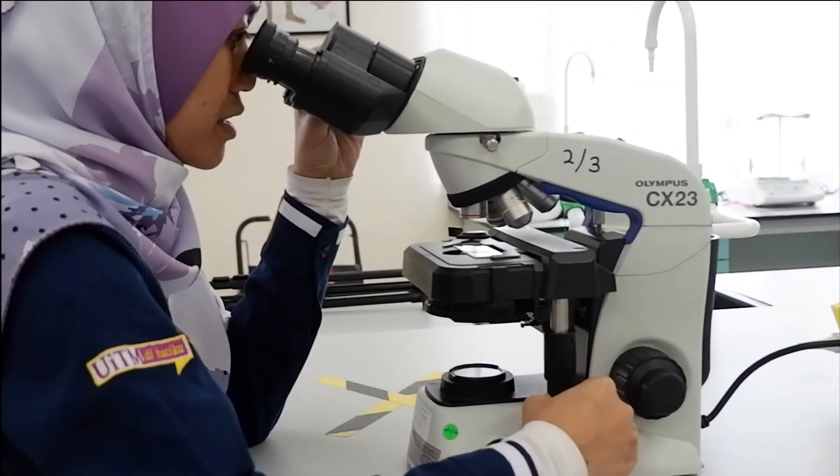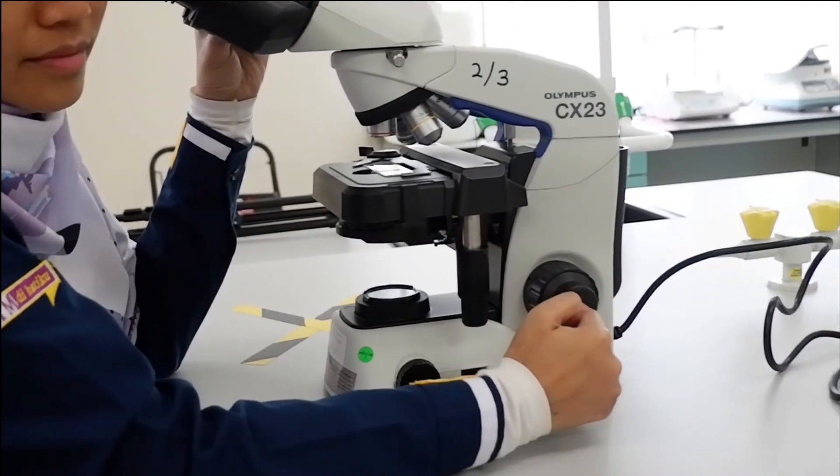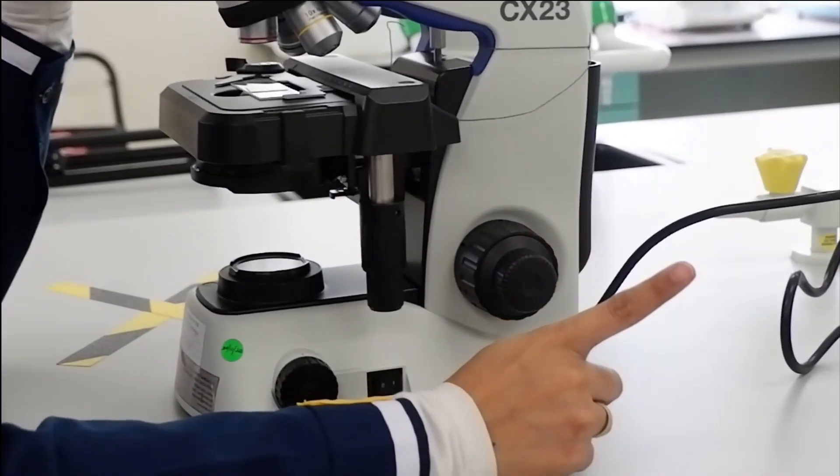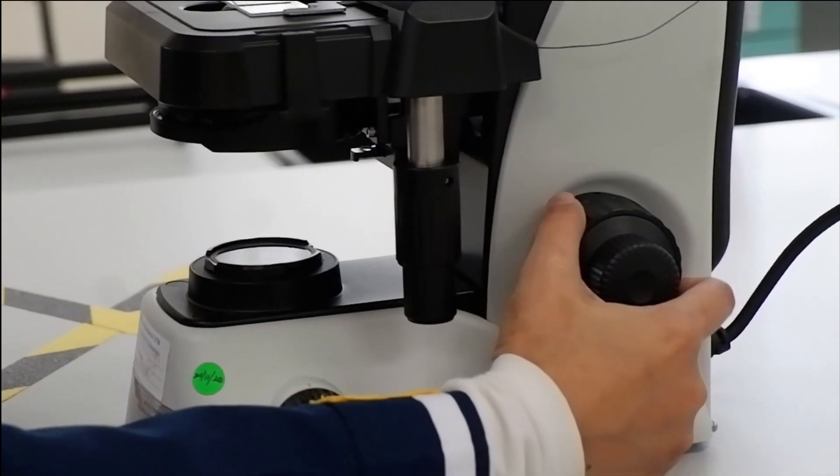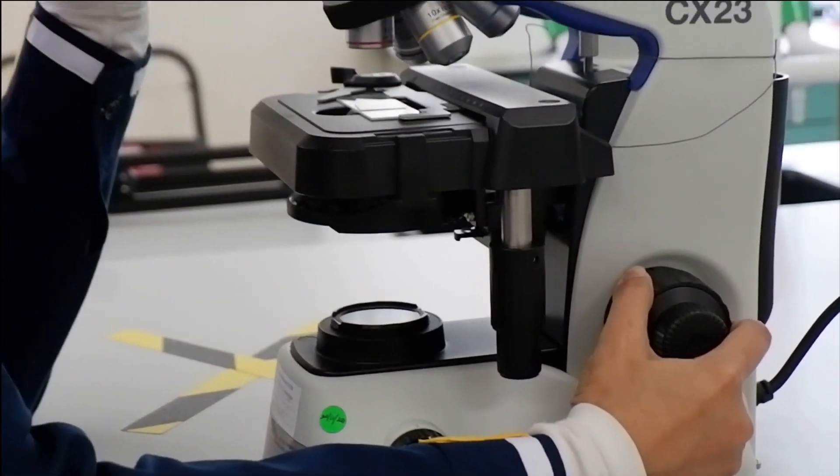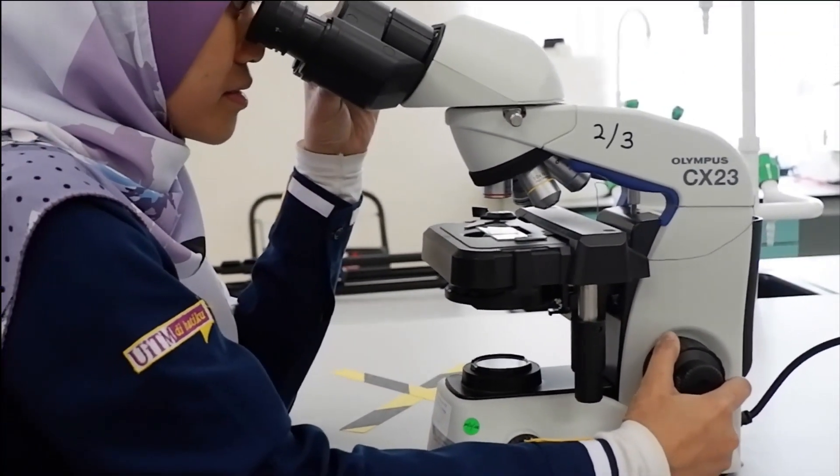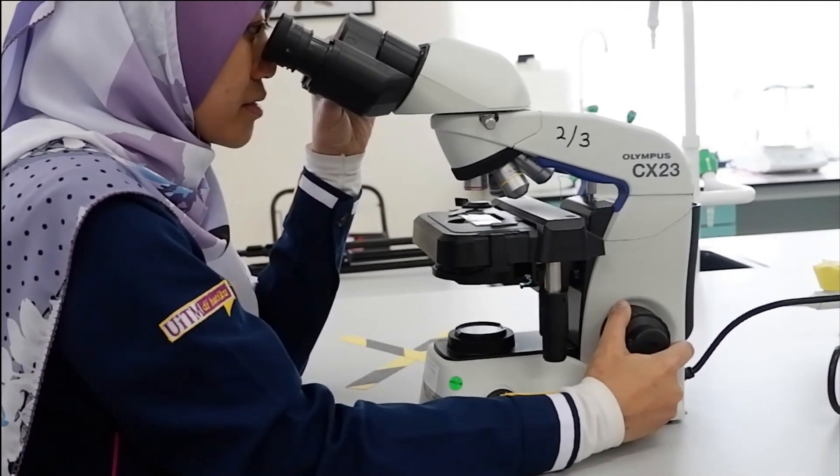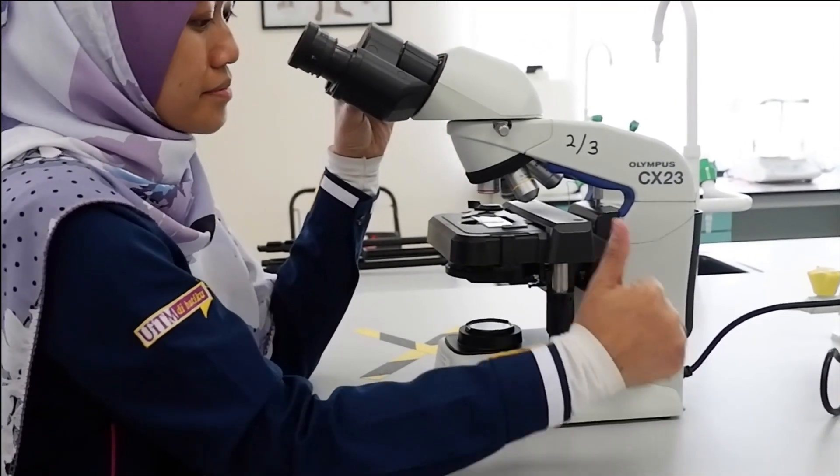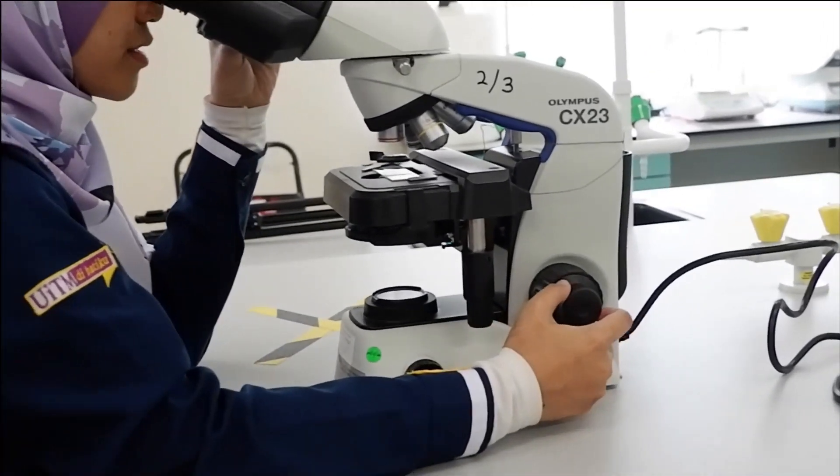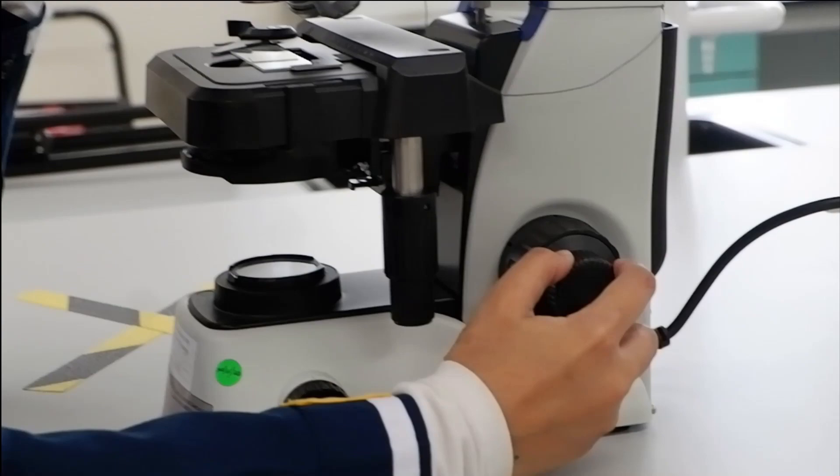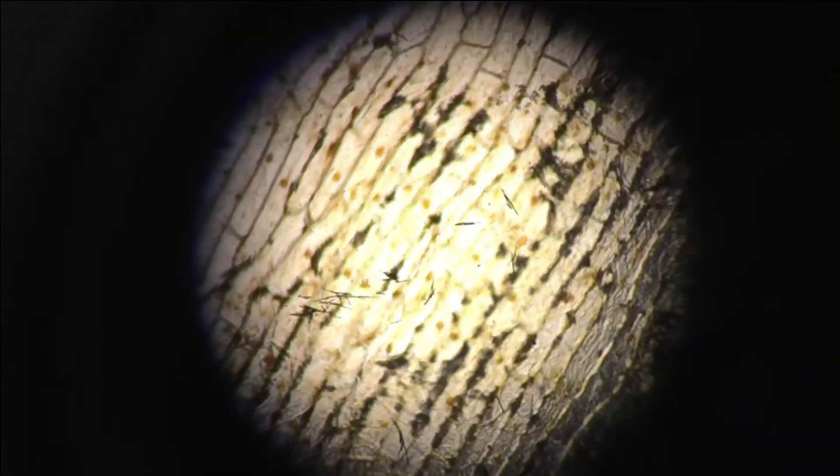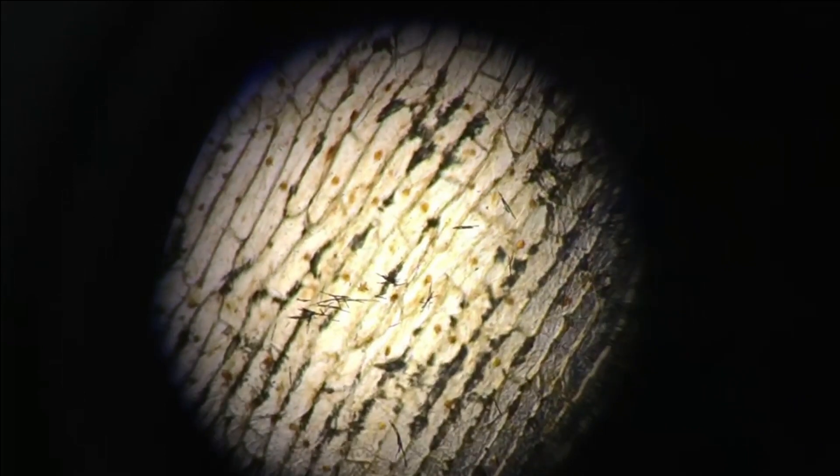Look through the eyepiece and make sure not to use fine focus knob at this moment. Move the coarse knob until the image comes into focus. And then you can use the fine focus knob to make sure that the image is clearer. This is what you will see under the microscope.